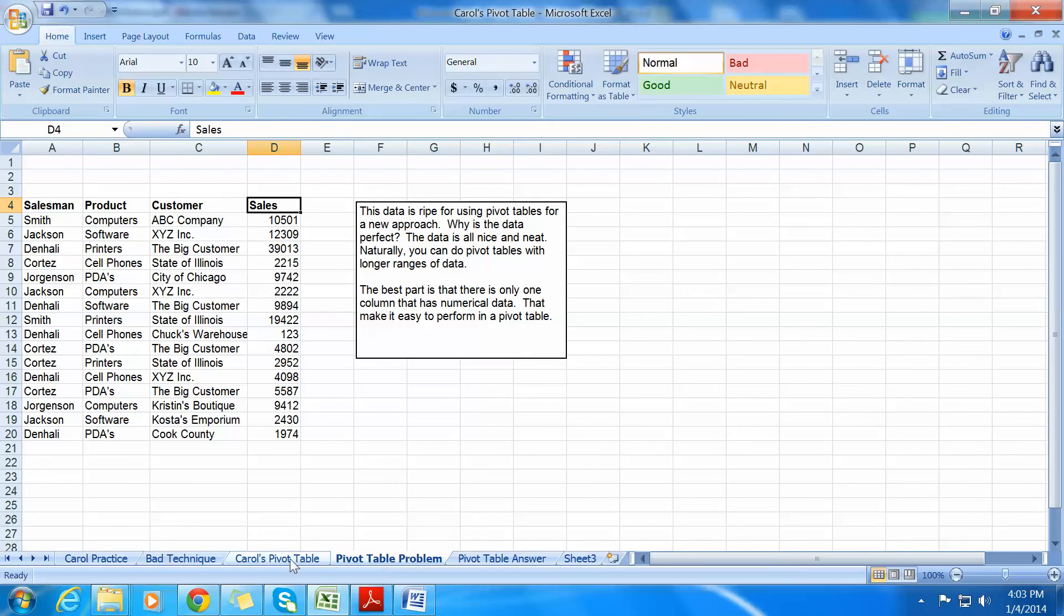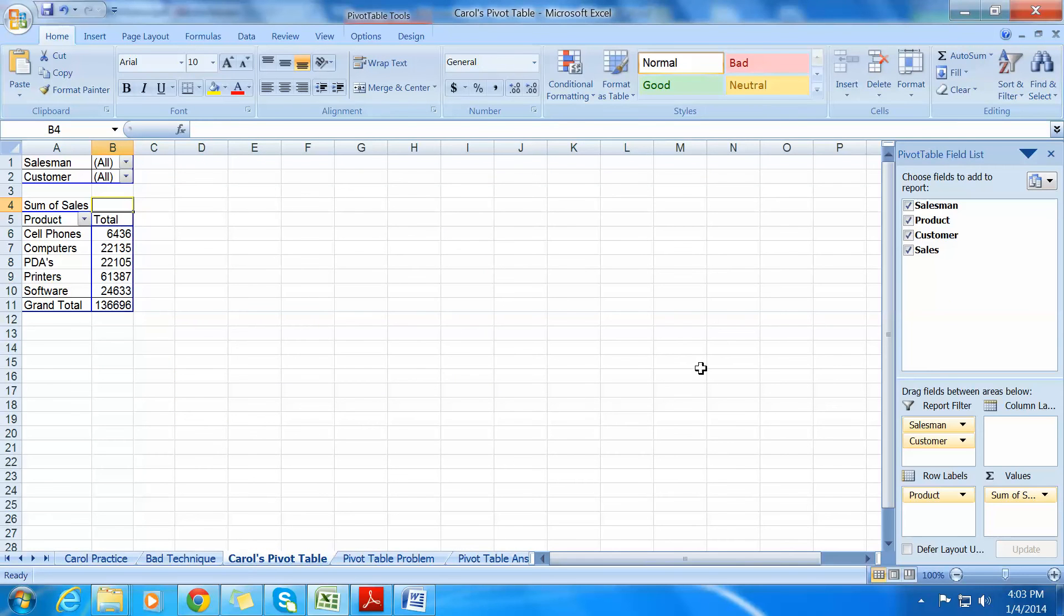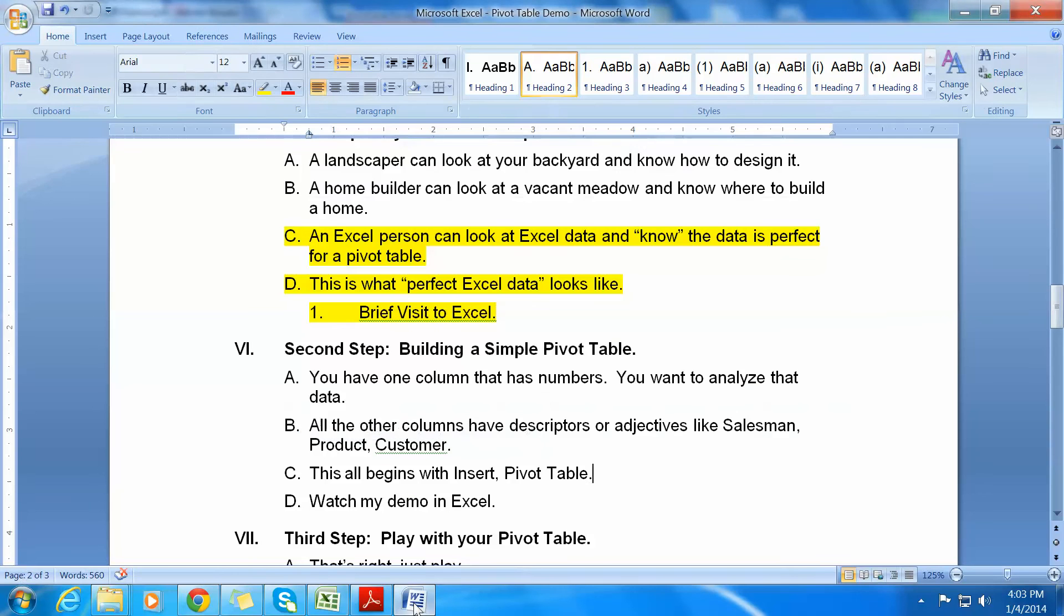When you have a spreadsheet that's very complex, that has lots of columns, if you had like maybe 10 columns, then picking and choosing what descriptors you would use would become more complex. But in this example, it's much easier because you have just four columns. Getting back to Carol's pivot table over here, we've built it. So what can we do with it? Well, we can move it around. But first, let's go back to the spreadsheet just for a little bit to my curriculum.